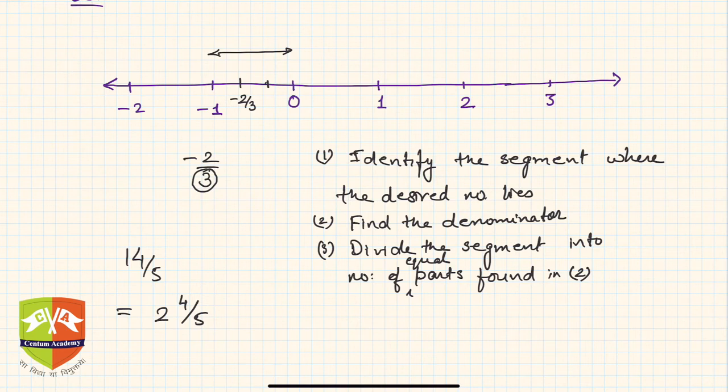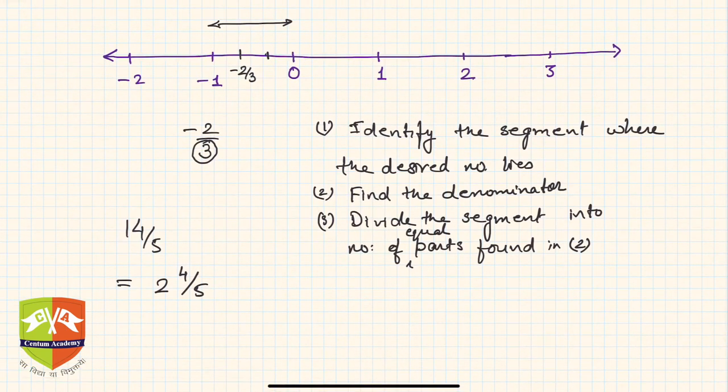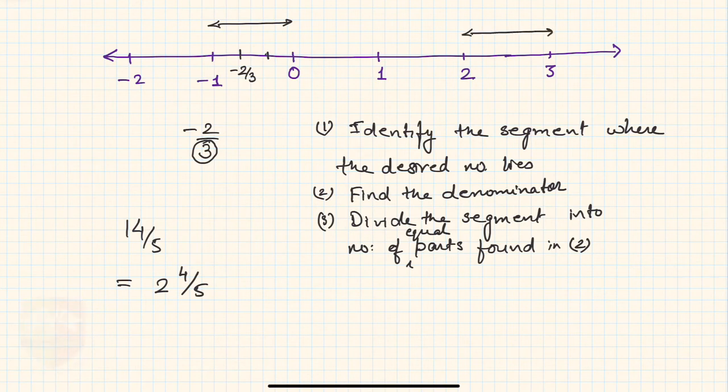2 whole 4/5 means the segment to be identified is between 2 and 3, because it is definitely more than 2 but less than 3. The denominator here is 5, so I divide the segment into 5 equal parts.